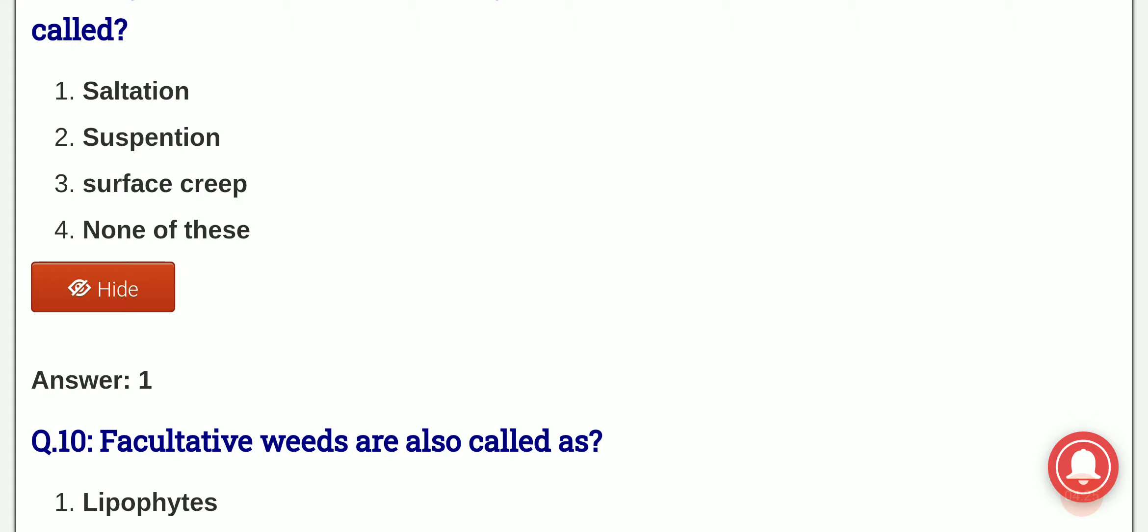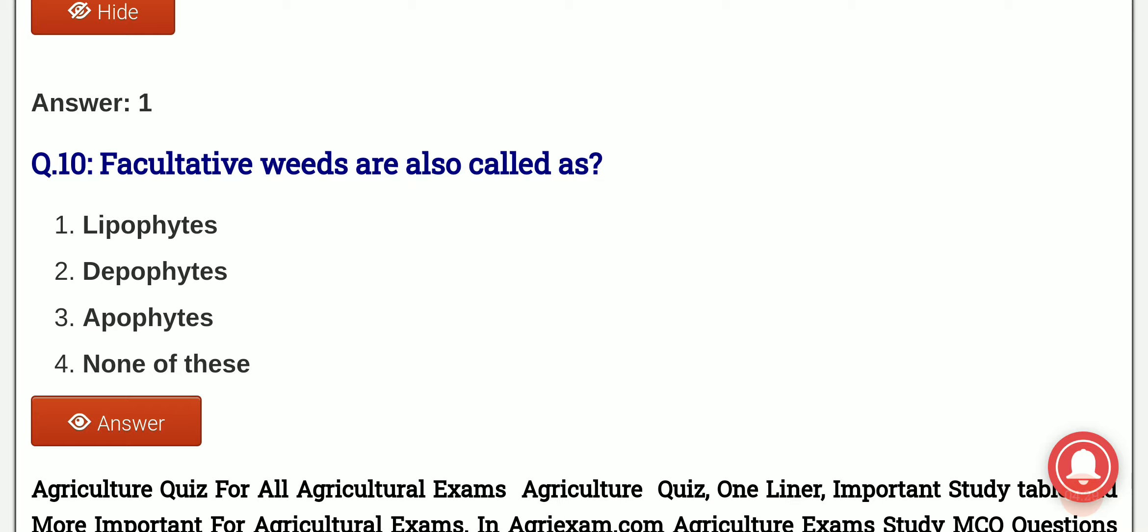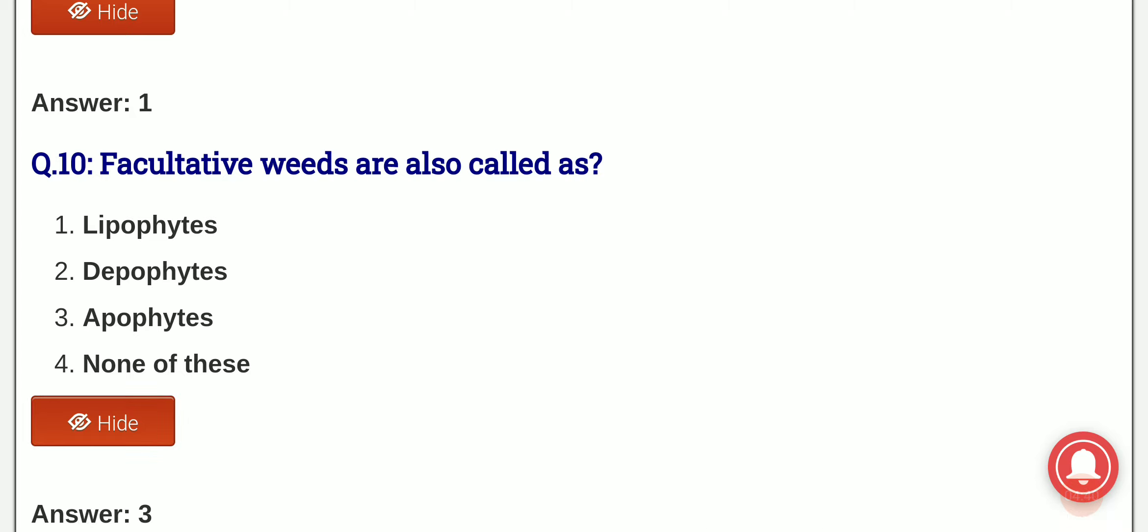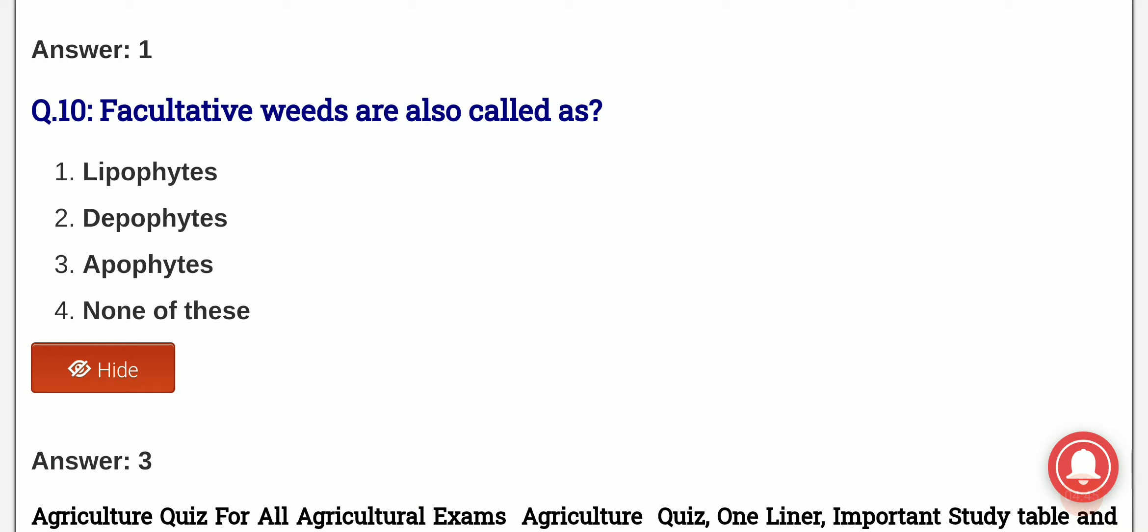Facultative weeds are also called as: the options are lipophytes, dipophytes, apophytes, or none of this. And the answer is option 3, that is apophytes. So facultative weeds are also known as apophytes.